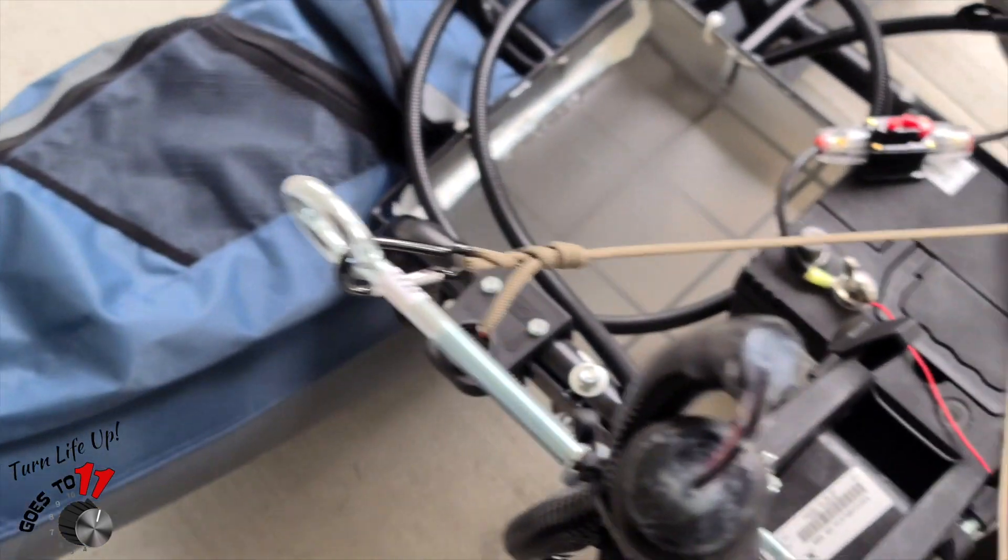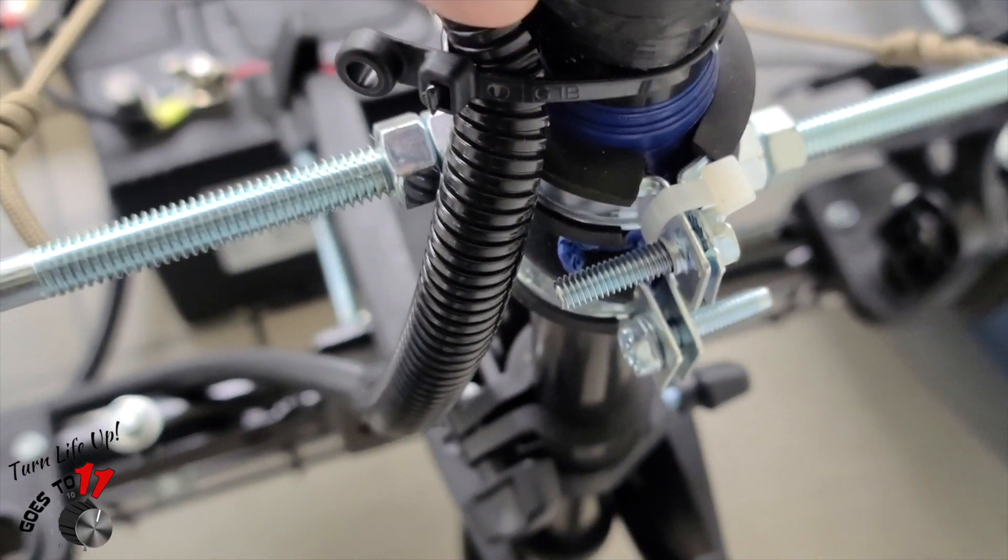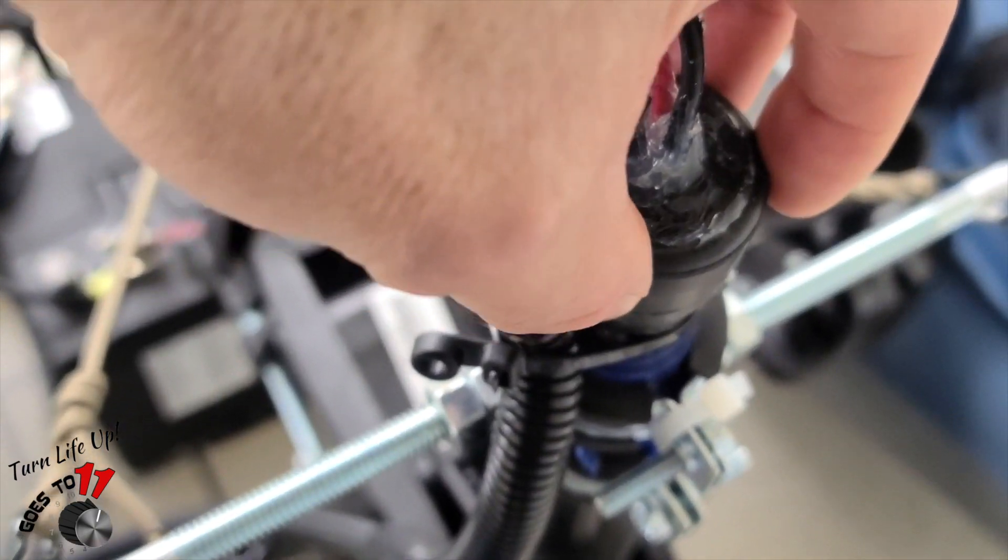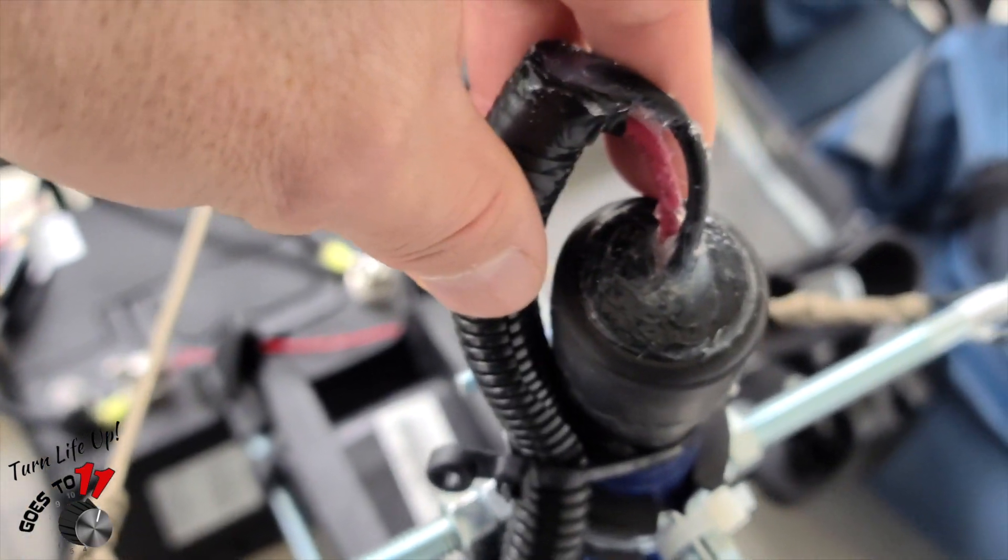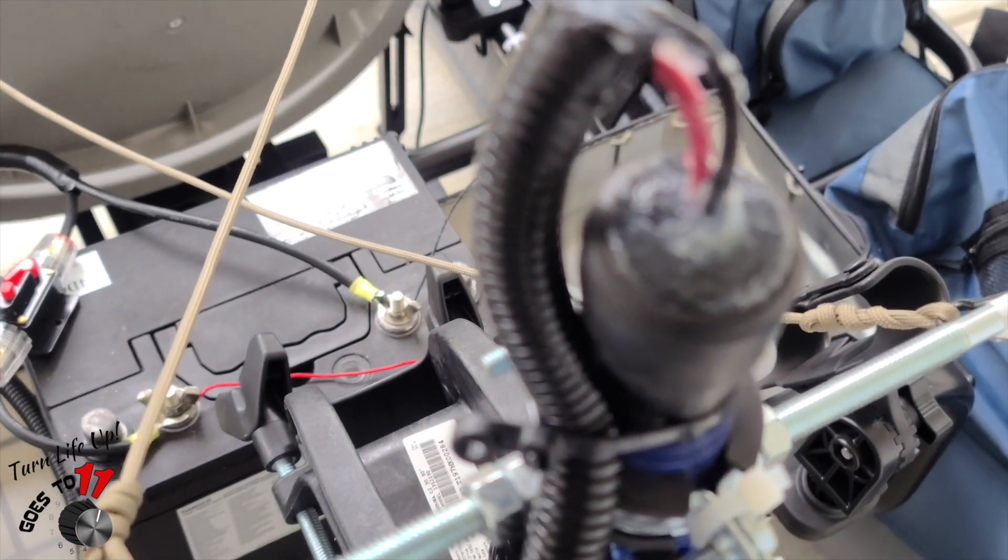And then what we've done, super simple fix here after we take the tiller head off, is I just used a rubber cap that you put on the bottom of a chair and it worked really well.